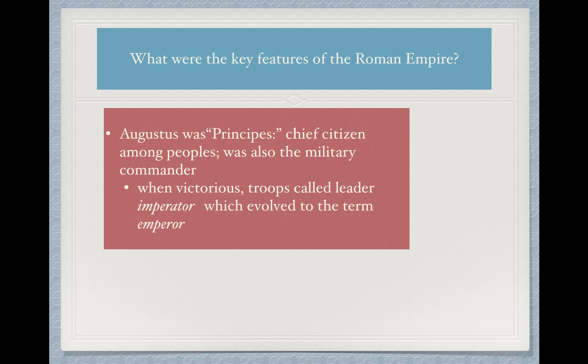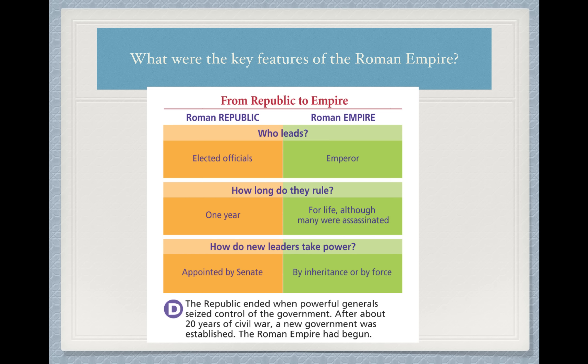Augustus was also the military commander, just like President Obama is the military commander in addition to being president as head of the executive branch. As his role as military leader, when a leader was victorious in battle, the troops would call him imperator. That imperator actually evolved into the term we now know as emperor. So that helps us understand not only the political role of the emperor but also the military significance of the emperor.